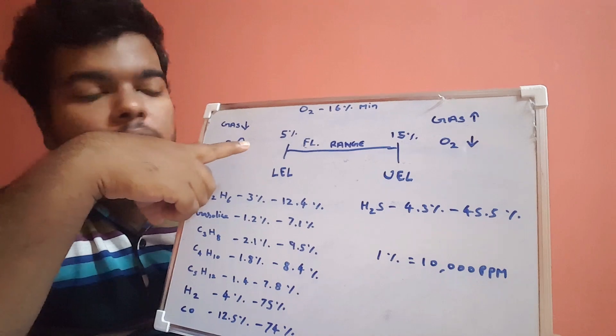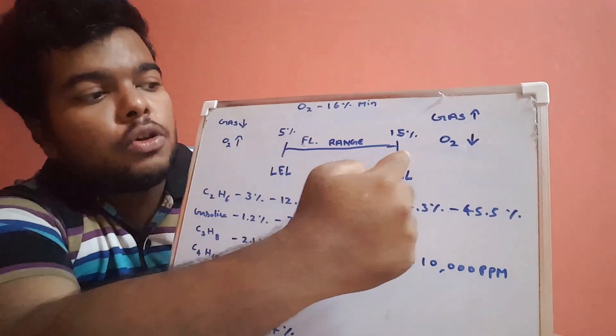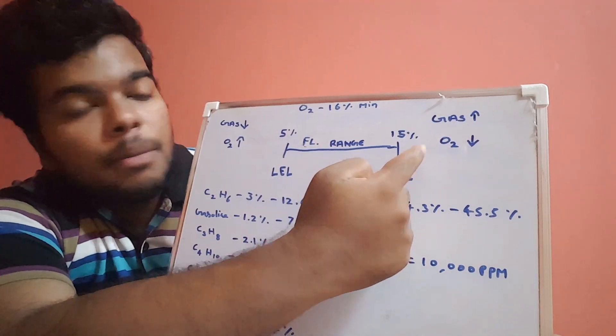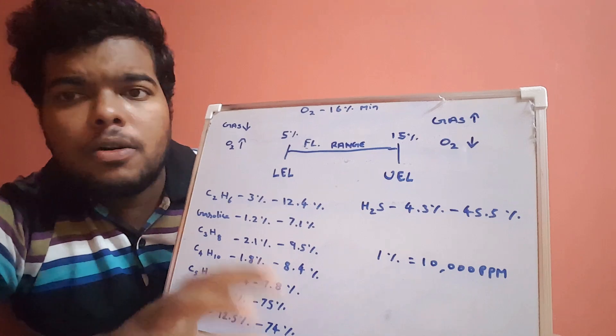The gases or vapor will be so low below the LEL, and the oxygen will be so low above the UEL. This is why, if you see in the normal multi-gas detector, we can have the value of oxygen, carbon monoxide, H2S, as well as this LEL.